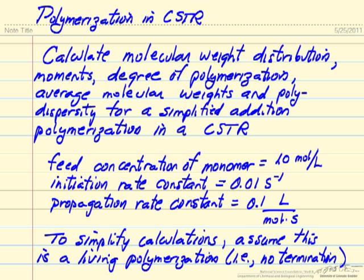We're going to do this for a simplified addition polymerization in order to make the calculations easier to see what's happening. We're given the feed concentration into the CSTR, the initiation rate constant, and the propagation rate constant, and there won't be any termination steps. To simplify the calculation, we'll assume this is a living polymerization that will continue to grow as we run for longer times.